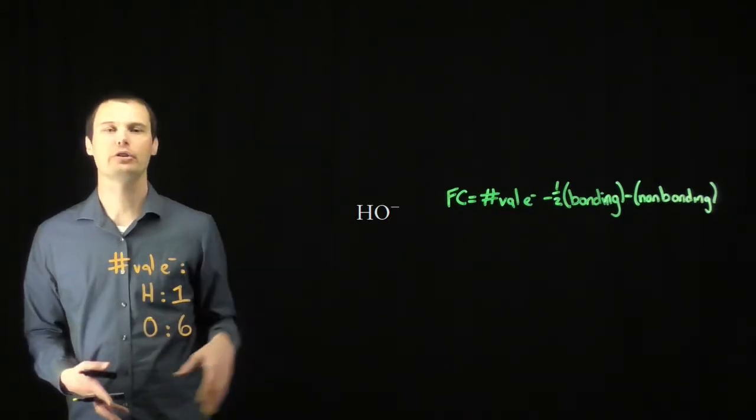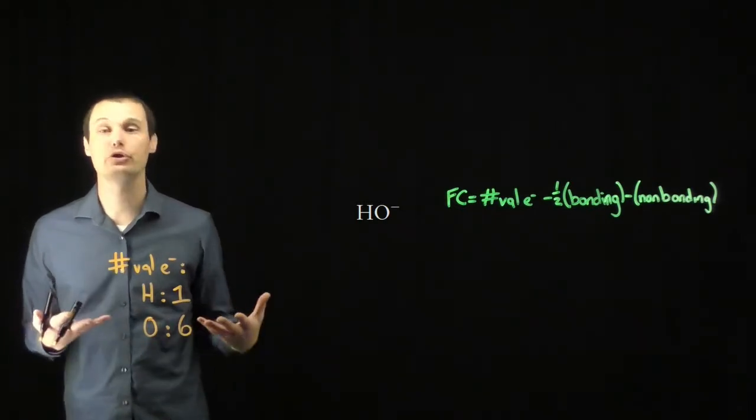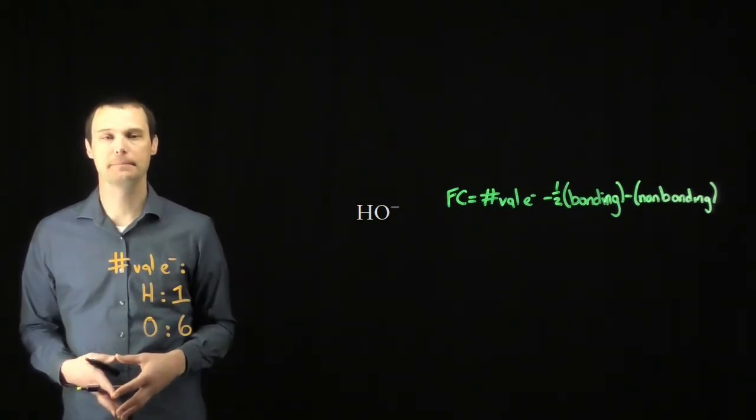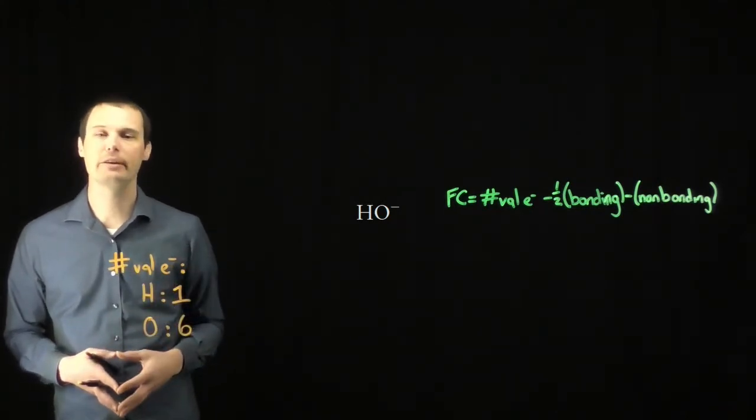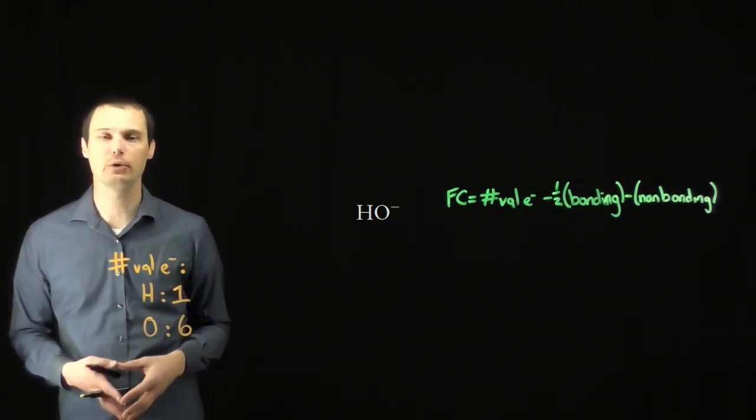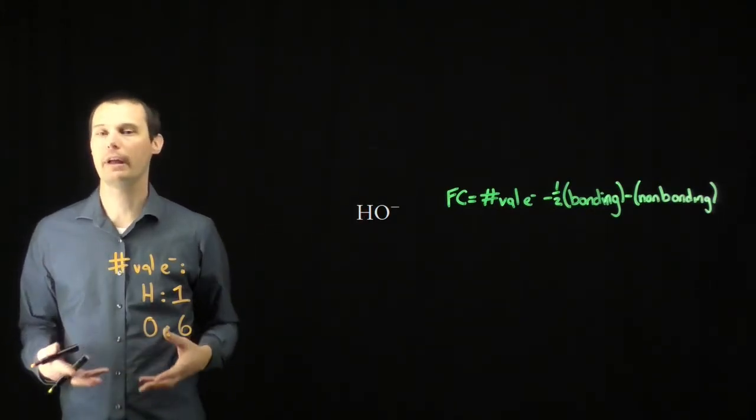This question asks us to draw the Lewis structure for the given ion and calculate the formal charge of each atom to ensure that our structure is correct. I've got some notes already drawn up here on the board. I've got the number of valence electrons that hydrogen and oxygen each have in their ground state neutral configuration, and for future reference, I've also got the formula for calculating formal charge.